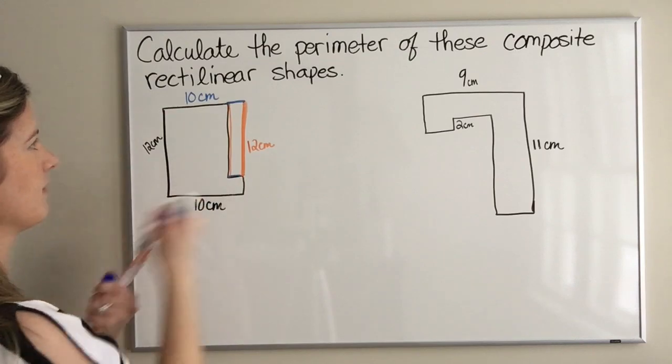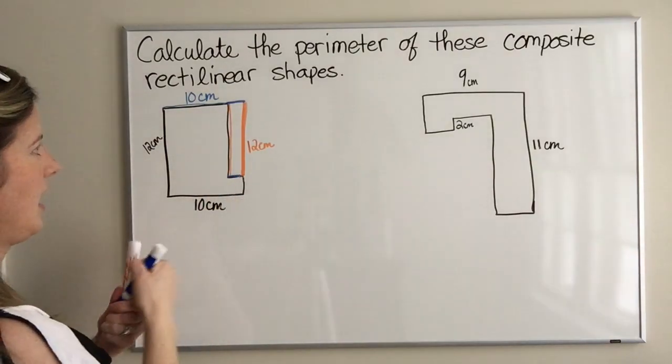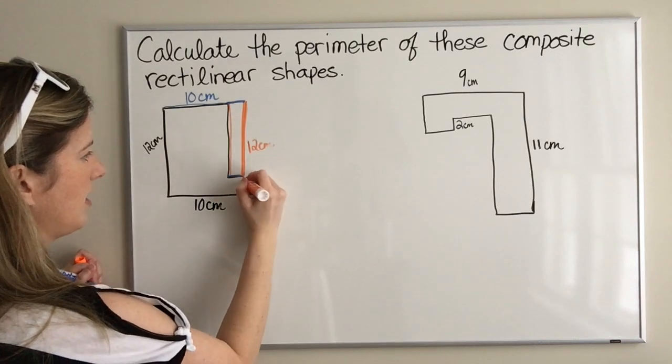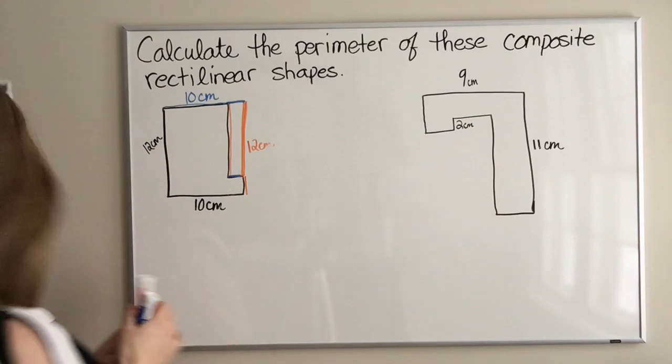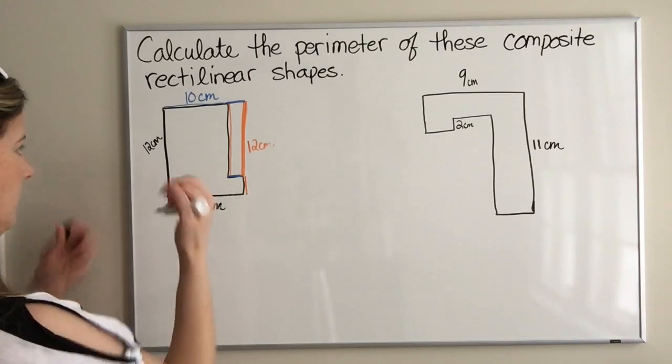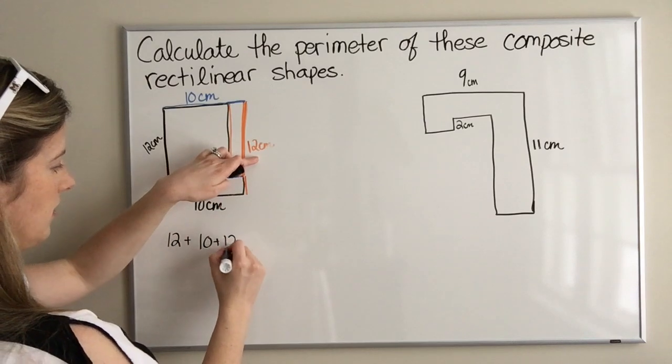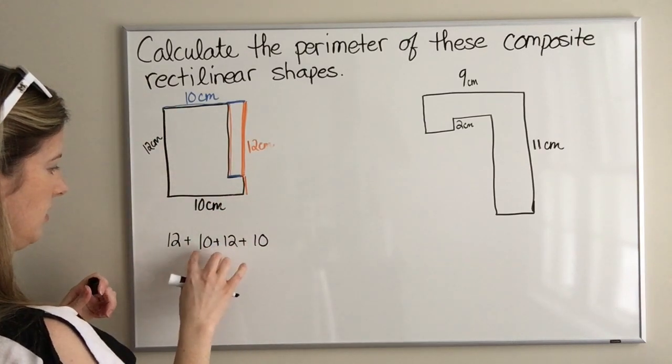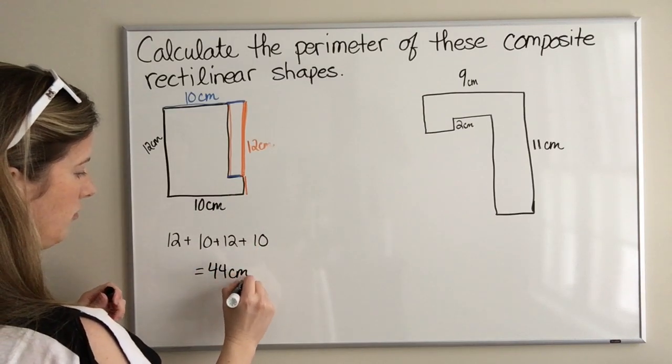The 10 is coming from this piece here and this piece here, and the 12 is coming from this piece here and this piece here. Now the perimeter is super easy, it's just going to be 12 plus 10 plus 12 plus 10. So that's going to be 44, so 44 centimeters will be the answer.